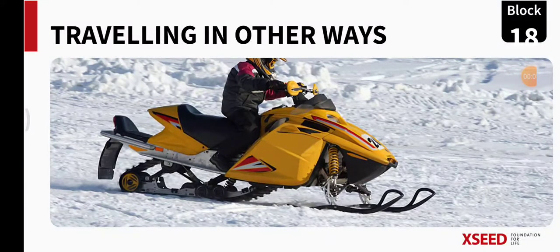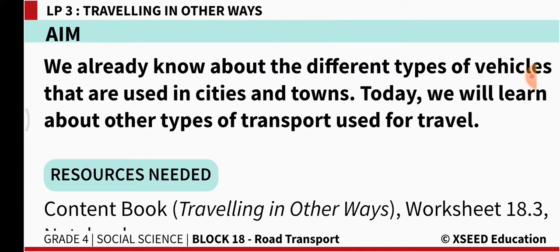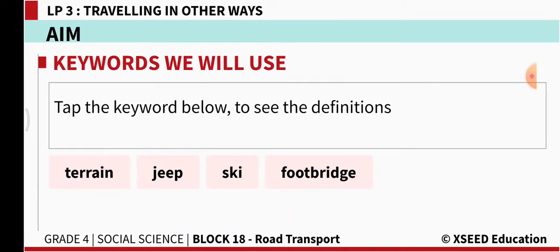Welcome students to our social science class. Today we are going to learn Block 18.3. The topic is 'Traveling in Other Ways.' On the screen you can see a vehicle which travels on places where there is a lot of snow. We already know about different types of vehicles used in cities and towns. Today we will learn about other types of transport used for travel — such as buses, trucks, cars, bicycles, and scooters.